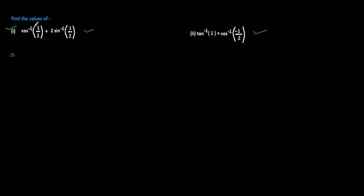Cos inverse 1 by 2. It is positive value, directly we can write the answer. Cos inverse 1 by 2 at which angle cos become 1 by 2, that is 60 degree. We can write it as pi by 3 for this part.